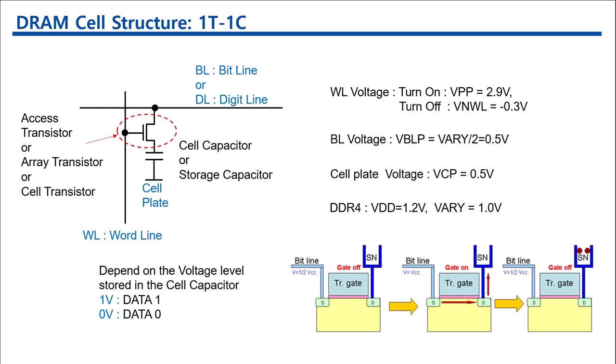There are several voltage levels related with DRAM cell. First, the word line turn-on voltage level, named VPP, is 2.9 volt. And the word line turn-off voltage level, called VNWL, is negative 0.3 volt.